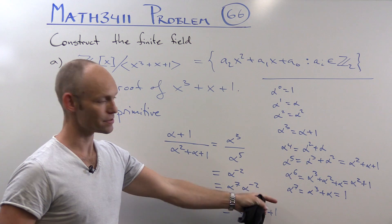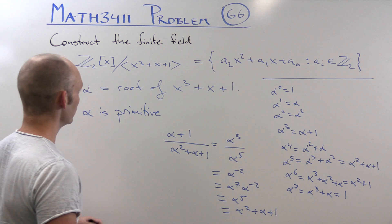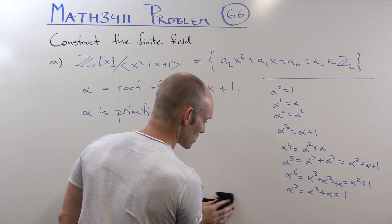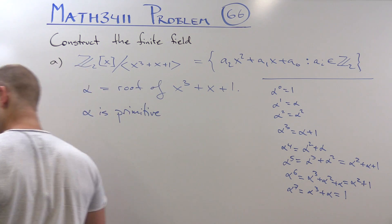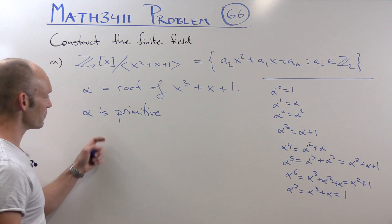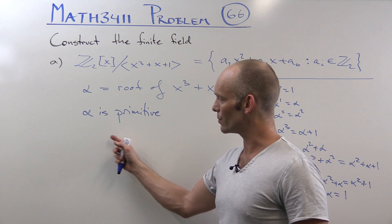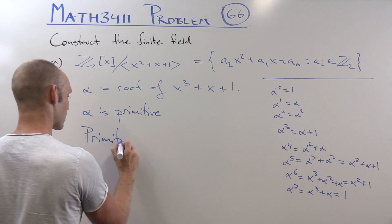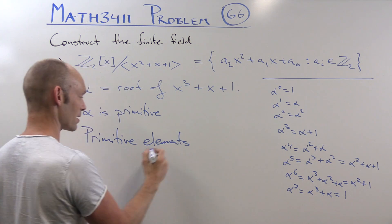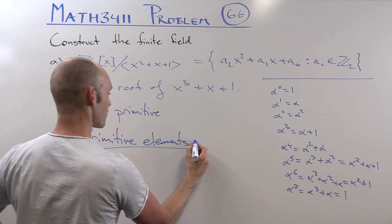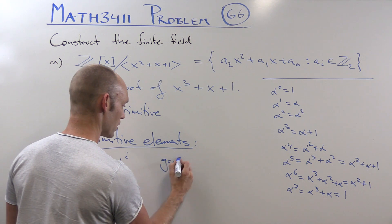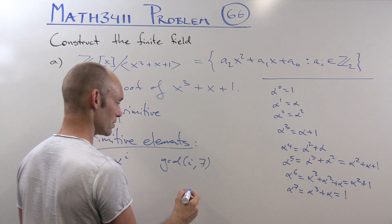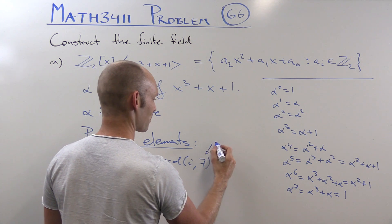Now we also have to find out which elements of this field are primitive. If you remember problem 61, where we dealt with integers mod some number — the way to find all primitive elements was to find one, and then identify the rest as powers of that primitive element. The primitive elements are α^i where i is co-prime with the number of units, which is 7 — the size of the field minus 1.